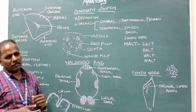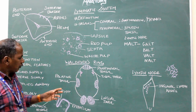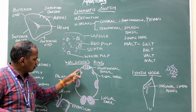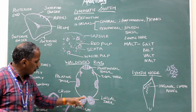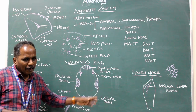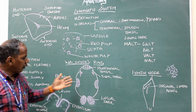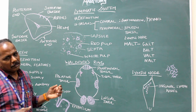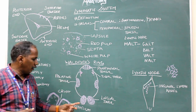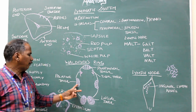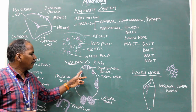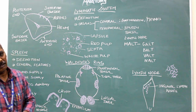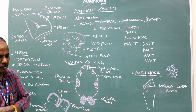Waldeyer's ring is a circular ring connecting the following tonsils: a pair of lingual tonsils, a pair of palatine tonsils, a pair of tubal tonsils, and a pair of pharyngeal tonsils. Together they form Waldeyer's ring.